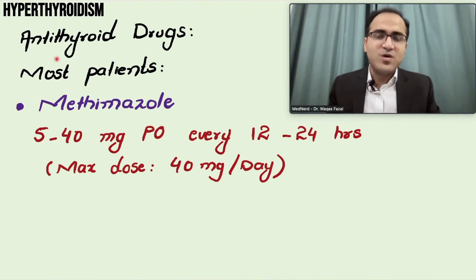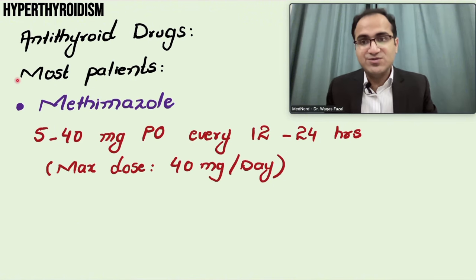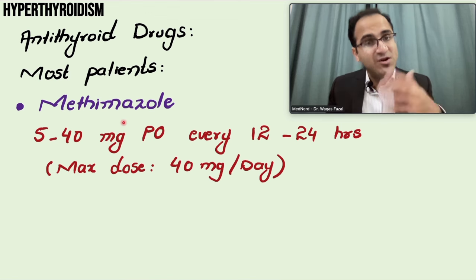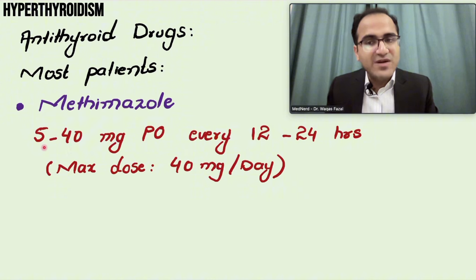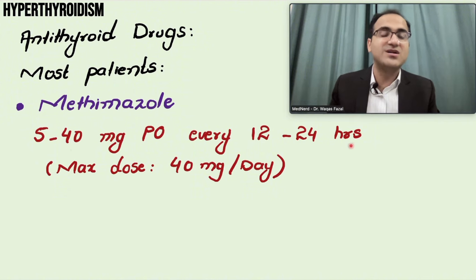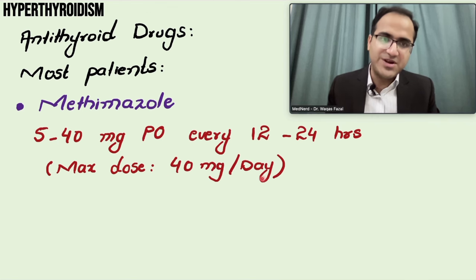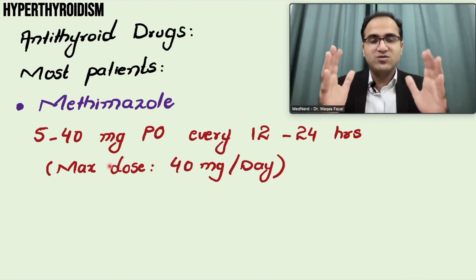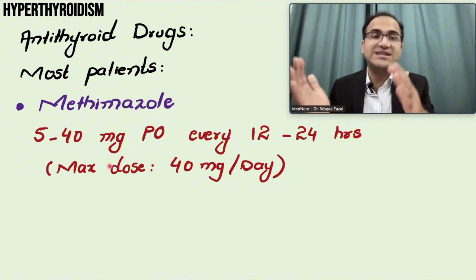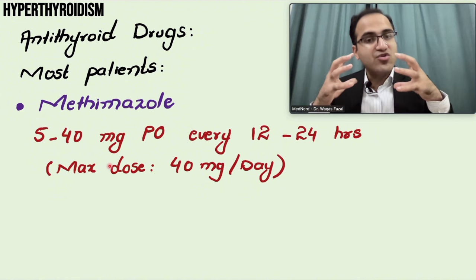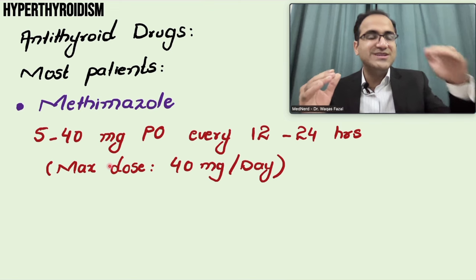For antithyroid drugs, most patients are started on methimazole. Carbimazole can also be used. Methimazole is given at 5 to 40 mg orally every 12 to 24 hours, with a maximum dose of 40 mg per day. This starting dose is higher than the maintenance dose - once the condition is controlled, you slowly taper off the dose.